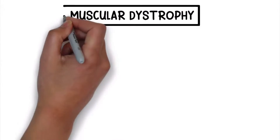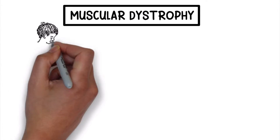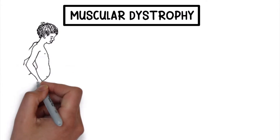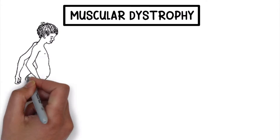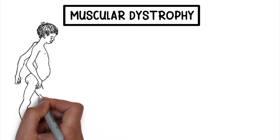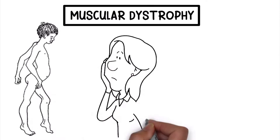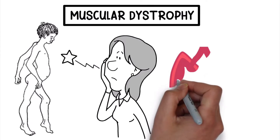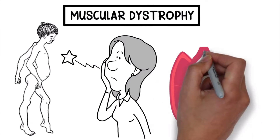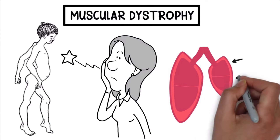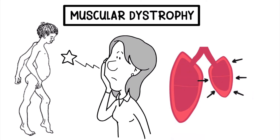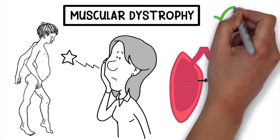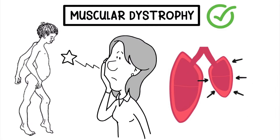Muscular dystrophy is an inherited condition of progressive muscle weakness that results in the inability to walk, difficulty swallowing, respiratory muscle insufficiency, and respiratory failure. This is why it's an important topic for respiratory therapists.